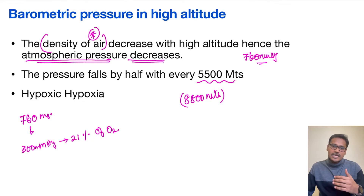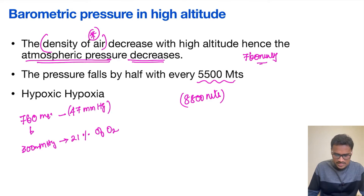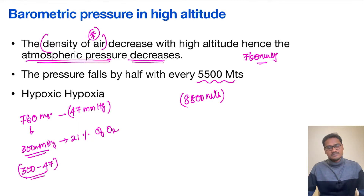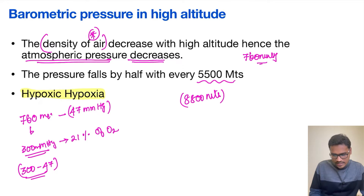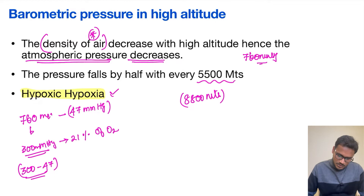One important thing: the water vapor pressure stays the same regardless of altitude changes. For example, water vapor pressure is 47 mmHg — the same amount whatever the altitude is. So out of the total pressure, 47 mmHg is taken by water vapor pressure, causing the overall oxygen partial pressure to drop significantly. At high altitude, the person suffers from hypoxic hypoxia, where the availability of oxygen itself is reduced.